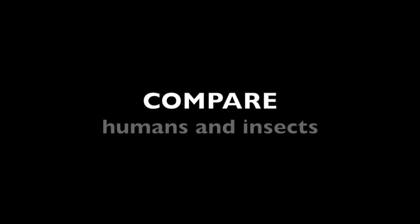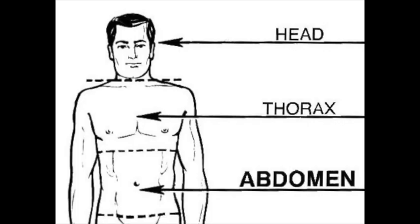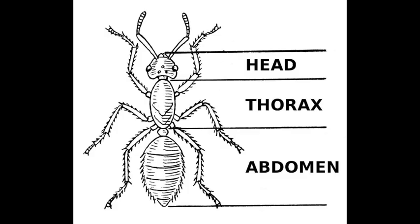Let's compare humans versus insects. Humans have a head, a thorax, and an abdomen. Guess what? So do insects.